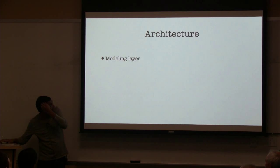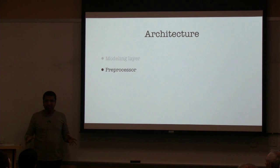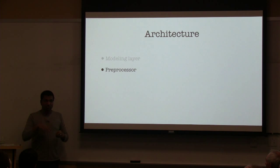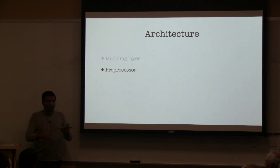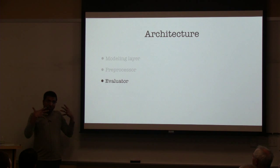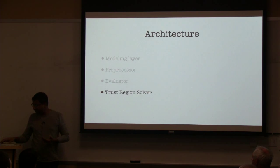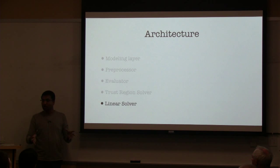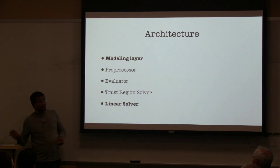The architecture is fairly straightforward. There's a modeling layer where you specify the structure of the optimization problem. A preprocessor handles redundancies, removes constant variables, handles bound constraints, reduces problem size, does sanity testing, and figures out fill-reducing orderings for efficient sparse linear algebra. An evaluator computes residuals and derivatives of your objective function. Then there's a trust region loop, and finally linear solvers that the trust region solver calls to solve the linear least squares subproblem. In the rest of the talk I'll mostly focus on the modeling layer and the linear solvers.